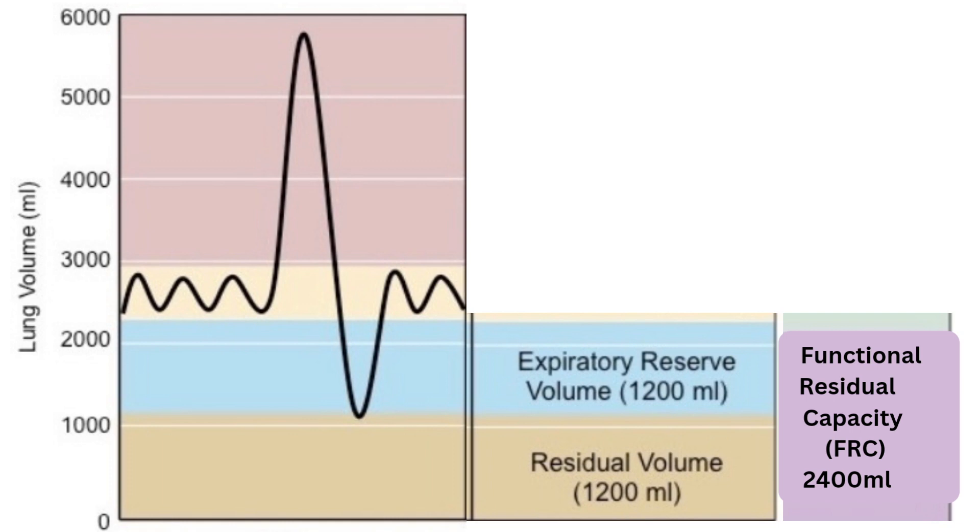Fourth, Functional Residual Capacity, FRC. FRC is the volume of air that remains in the lungs after a regular exhale. It's the sum of ERV and RV, totaling about 2,400 milliliters.